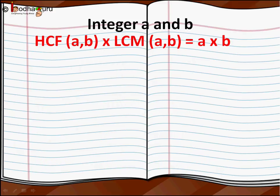Remember for any positive integers a and b, the product of their HCF and LCM is equal to the product of the two integers itself, that is a × b.